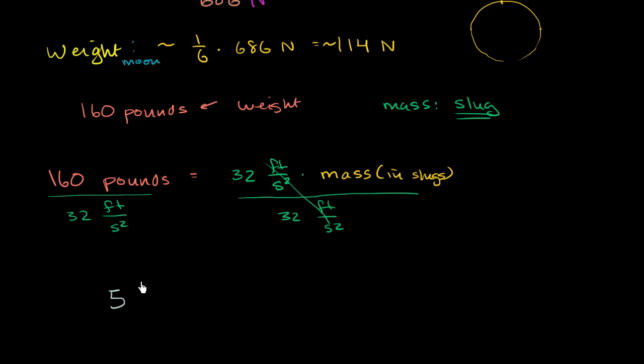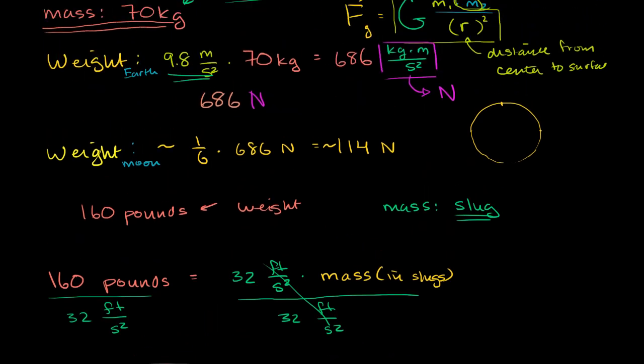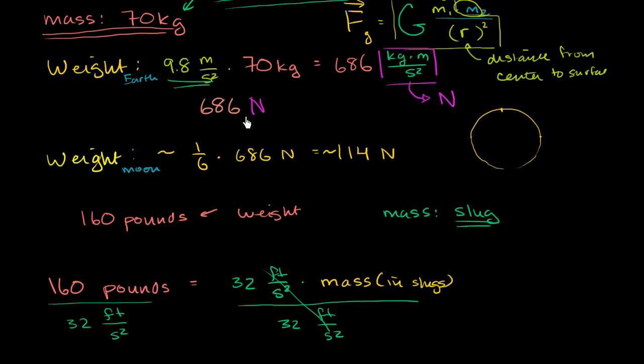So I get 5, and the units here in the numerator, I have pounds. I have pounds. And then I'm dividing by feet per second squared. That's the same thing as multiplying by second squared per feet. And these units, five pounds second squared over feet, this is the same thing as a slug. So if I weigh 160 pounds, my mass is going to be equal to five slugs. If my mass is 70 kilograms, my weight is 686 newtons. So hopefully that clarifies things a little bit.